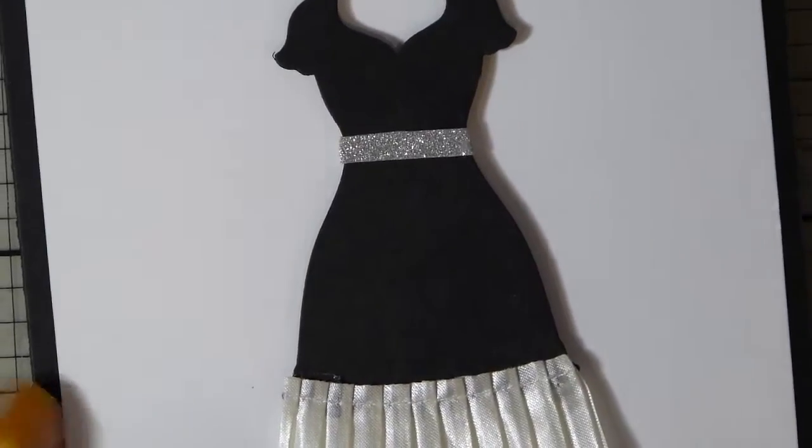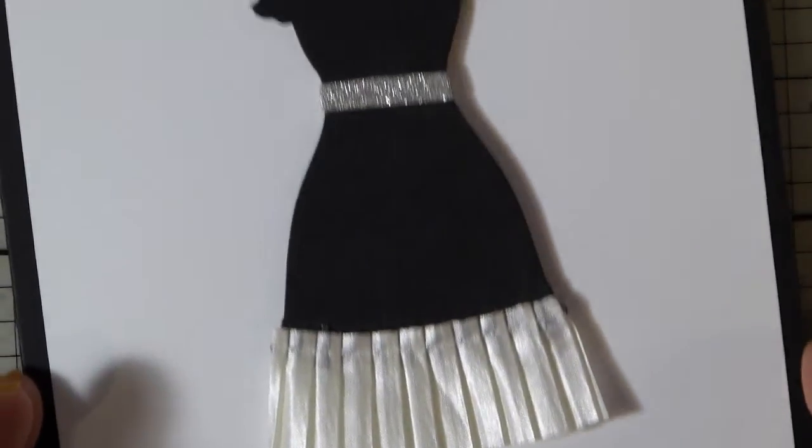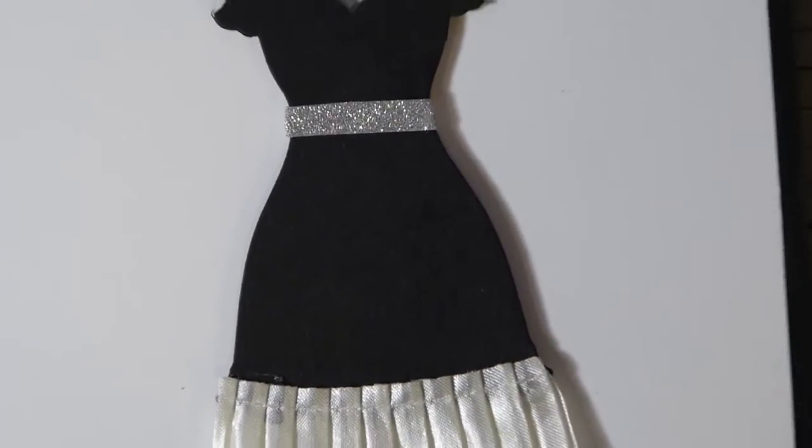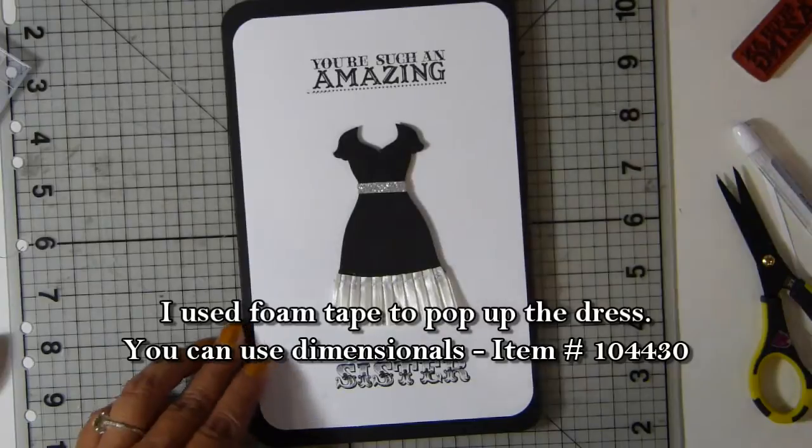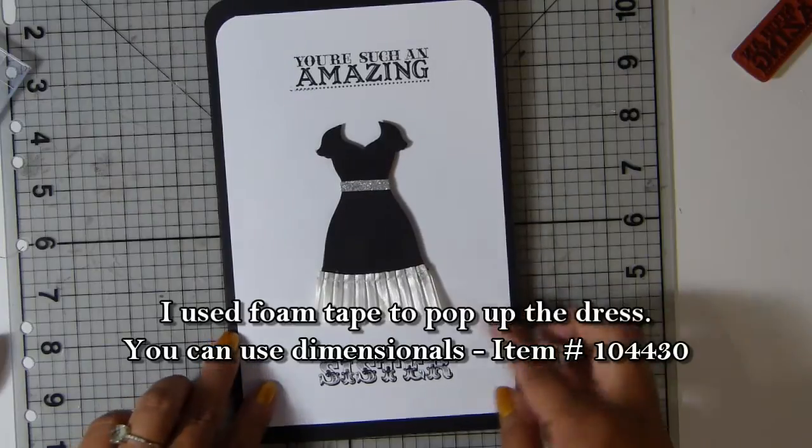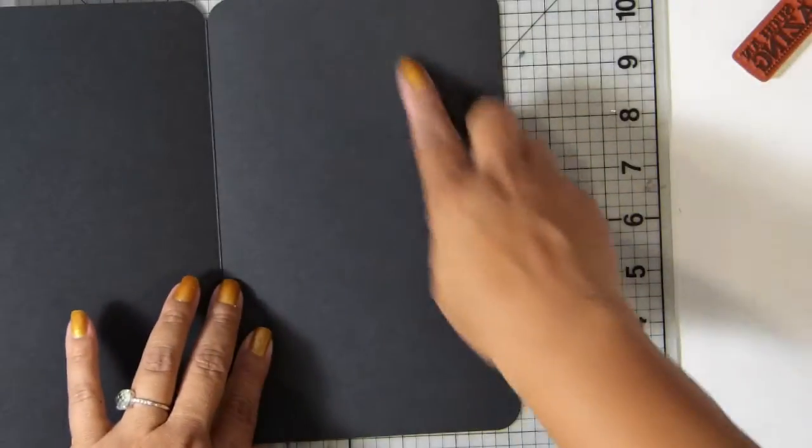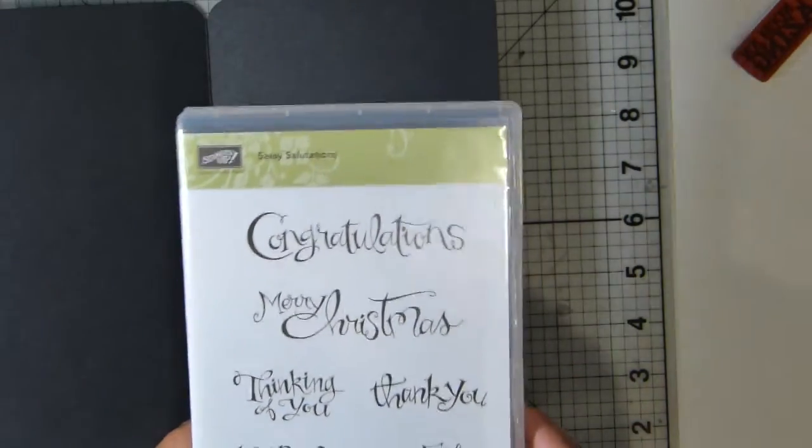Let me show you a detail of the dress. It's blingy and elegant. Since she's having a black and white theme, I just went ahead and did a black and white card. Really simple and elegant. What I'm going to do on the inside with the rest of the paper is put my sentiment. I'm going to use the happy birthday from the Sassy Salutation.